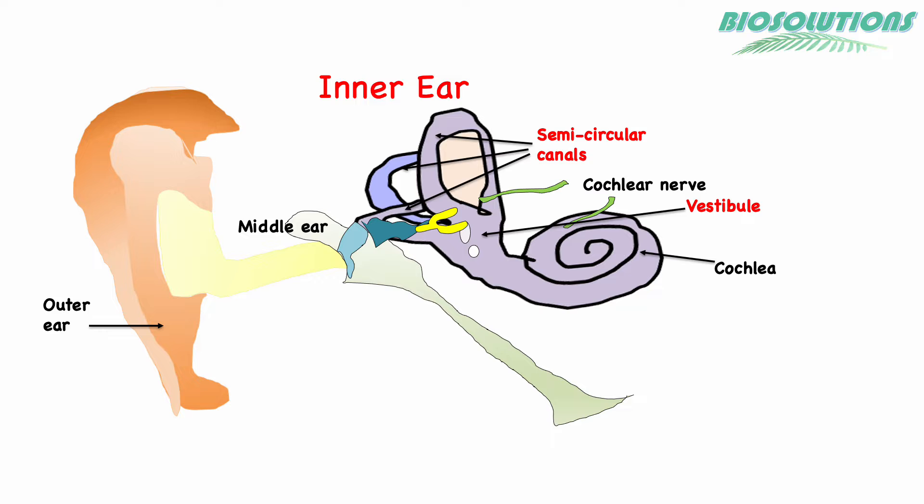In our inner ear, besides the cochlea, there are three semicircular canals and a vestibule which create the vestibular system. Let's first understand the anatomy of the vestibular system.